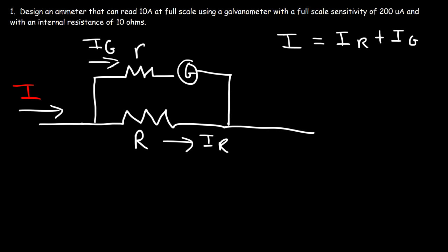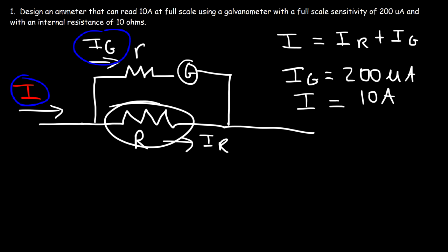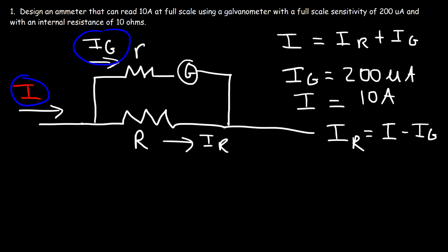The total current I is the sum of IR plus IG. The maximum current the galvanometer can accept at full deflection is 200 microamps, so that equals IG. When the ammeter receives 10 amps, we only want 200 µA to flow through the galvanometer — the rest flows through the shunt resistor. So IR equals I minus IG, and since IG is very small, IR is approximately equal to the total current I.